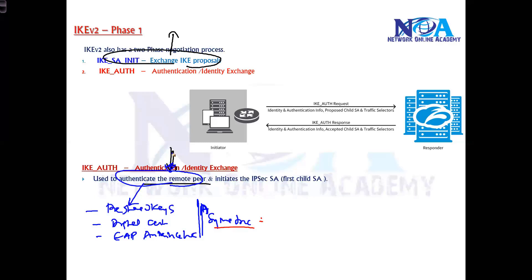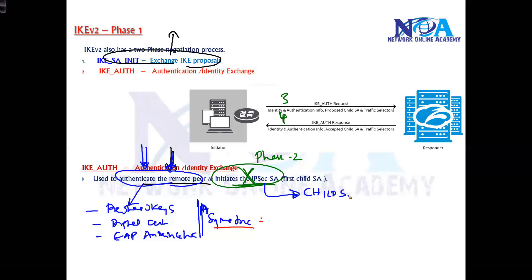Once authentication is successful, it moves to phase two. Comparing with IKEv1, the phase two process also happens within these message three and four exchanges — meaning IPSec SA creation and child SA creation both occur here. This will be explained in more detail in the next section.